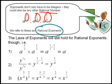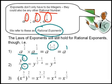The laws of exponents still hold for rational exponents. For instance, 8 to the power of a half times 8 to the power of a half still simply adds the exponents — a half plus a half gives you 8 to the power of 1. If you have y to the power of a half divided by y to the power of a quarter, you subtract the exponents: a half minus a quarter gives you y to the power of a quarter.